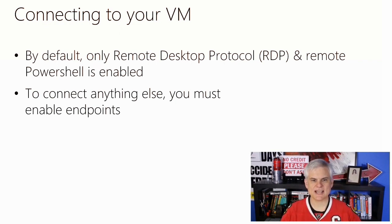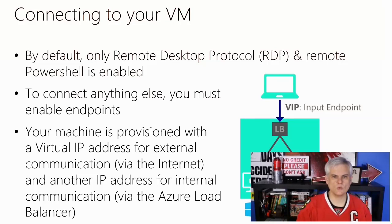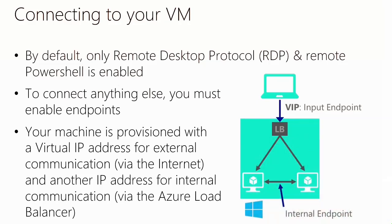Once your machine is actually provisioned, it will be provisioned with two IP addresses — one for Internet-facing communication, and one for private communication inside of Azure only. We're going to spend an entire module explaining the various IP addresses and how they work, and we're going to talk about the Azure Load Balancer and the internal Load Balancer and the roles that they play.